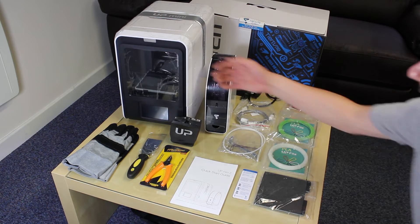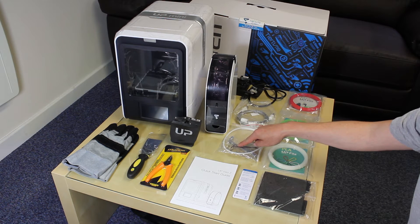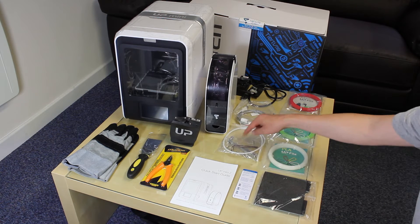First up you've got the tool kit which comprises of the gloves, scraper, snips and you've also got some allen keys here along with the tube for the filament.